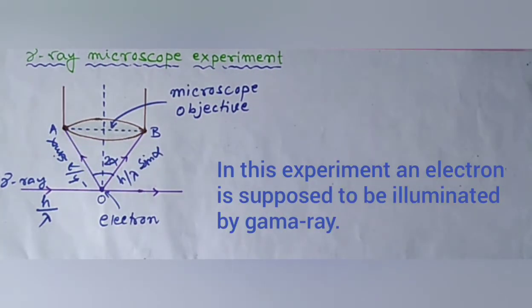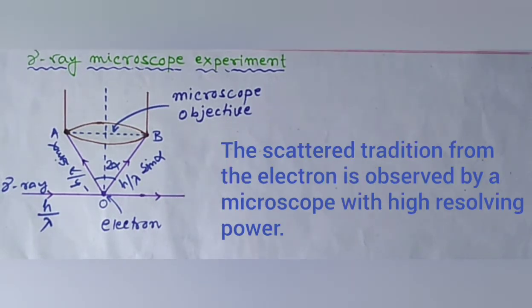In this experiment, an electron is supposed to be illuminated by gamma ray. The scattered radiation from the electron is observed by a microscope with high resolving power.